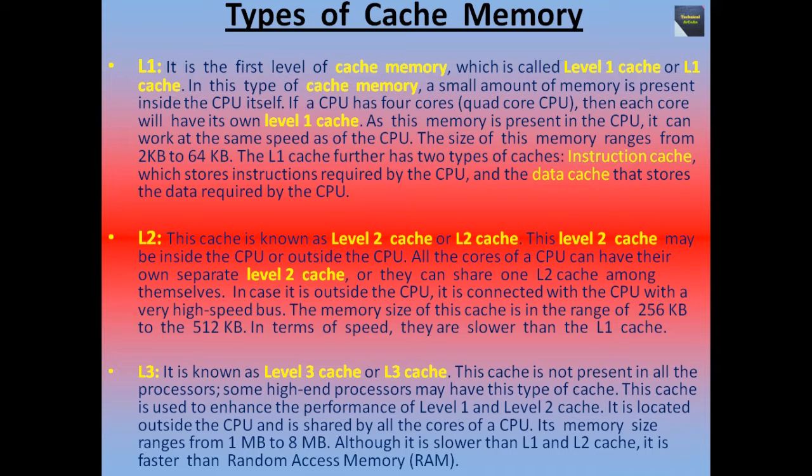Since L1 cache memory is present in the CPU, it can work at the same speed as the CPU. The size of this memory ranges from 2 KB to 64 KB. The L1 cache further has two types: instruction cache, which stores instructions required by the CPU, and data cache, which stores the data required by the CPU.